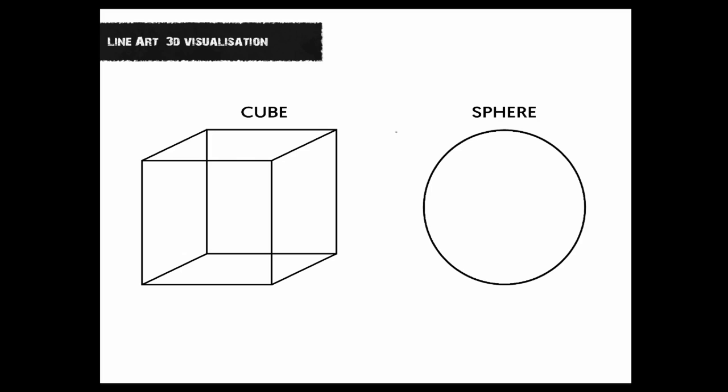First we have 3D visualization — we have a cube and a sphere. The sphere is basically just a circle, so we don't have to stress that one too much. But one thing that can help us see it in 3D space is to draw a line that's kind of curved — and that gives us information of the surface. This thing already looks more 3D than it did before. The cube is quite self-explanatory — we already see it in 3D space.